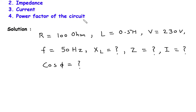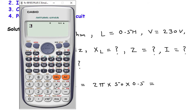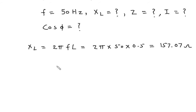First we will find inductive reactance. XL is equal to 2 pi F L. The value of frequency is 50 hertz and inductance is 0.5 henry. So this will be 2 pi multiplied by 50 multiplied by 0.5, which gives 157.07 ohm. Therefore XL is equal to 157.07 ohm.